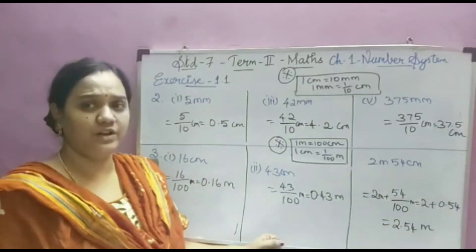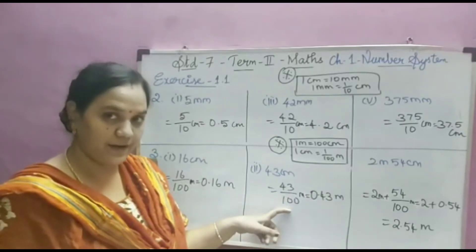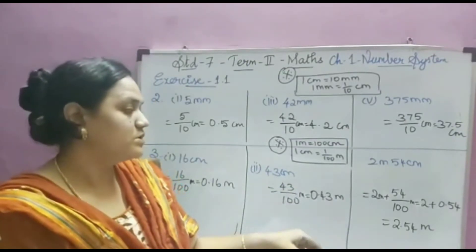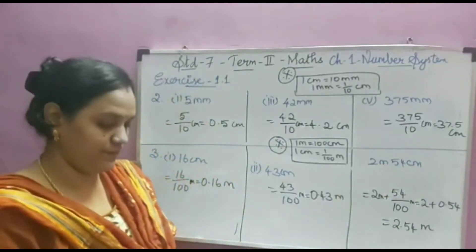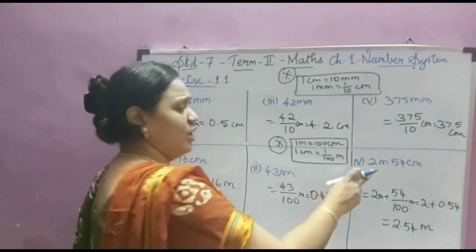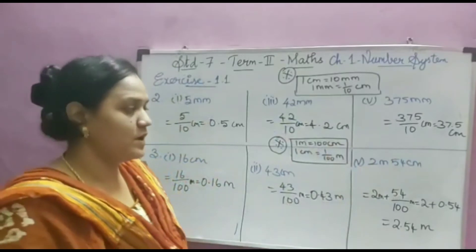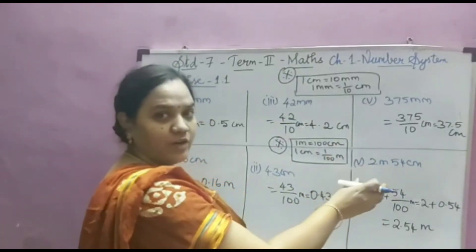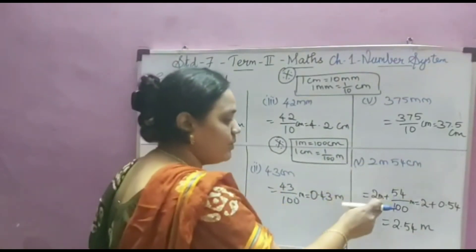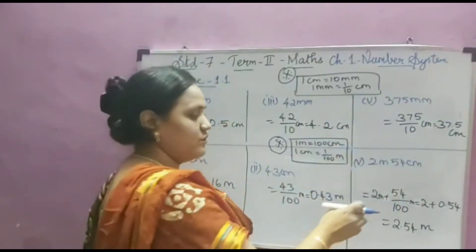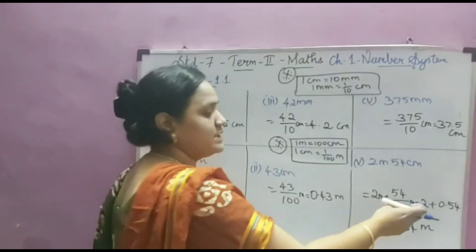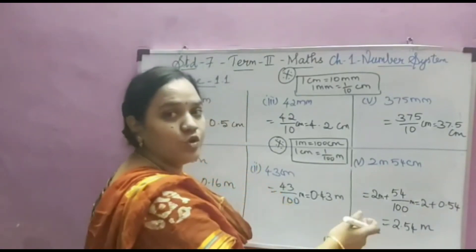For 43 centimeters converted to meters, I am dividing by 100. Two digits before, I keep the point, so my answer is 0.43. For the fifth option: the question gives 2 meters and 54 centimeters. 2 meters stays as is — no conversion needed. I only convert the centimeter part: 54 ÷ 100, keeping the point before two digits gives 0.54. So 2 plus 0.54 equals 2.54.